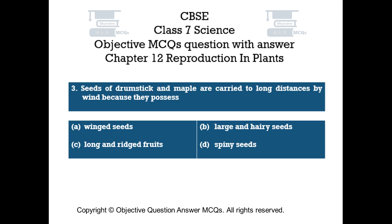Question number 3. Seeds of drumstick and maple are carried to long distances by wind because they possess. Option A: Winged seeds. Option B: Large and hairy seeds. Option C: Long and ridged fruits. Option D: Spiny seeds.